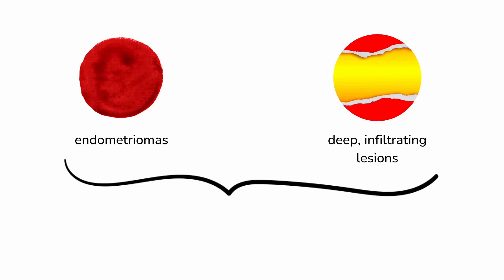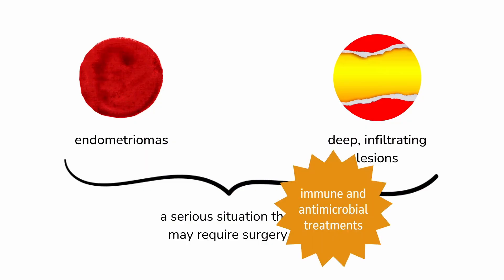Endometriomas and/or deep infiltrating lesions can definitely be the explanation for symptoms like pain and infertility, and they can be serious enough to require surgery, although it is worth pointing out that even those types of lesions can, in some cases, regress on their own or with non-surgical treatments, including, I would argue, immune and antimicrobial treatments, which I'll come to a little later.